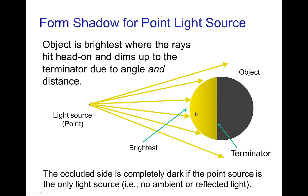Now this effect of decreasing intensity with distance combines with the effect of decreasing intensity as the form turns away from the light source. So with a point light source, of course it's going to be brightest where the light rays are hitting head on.